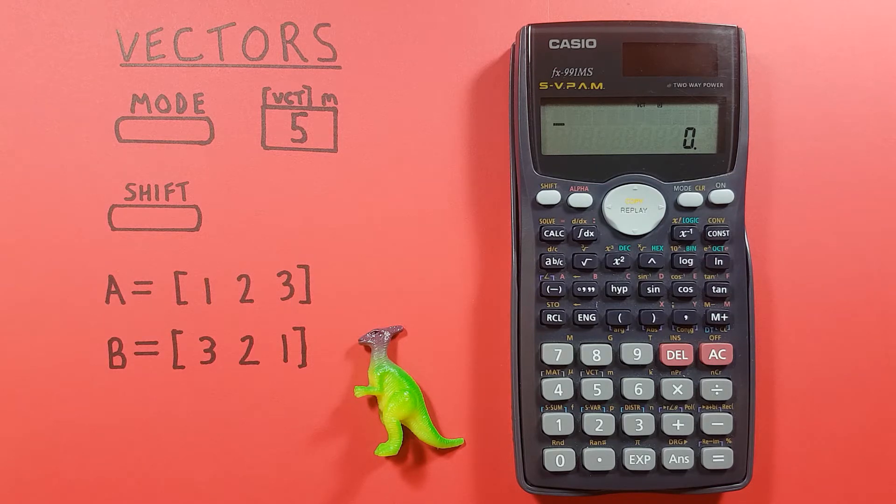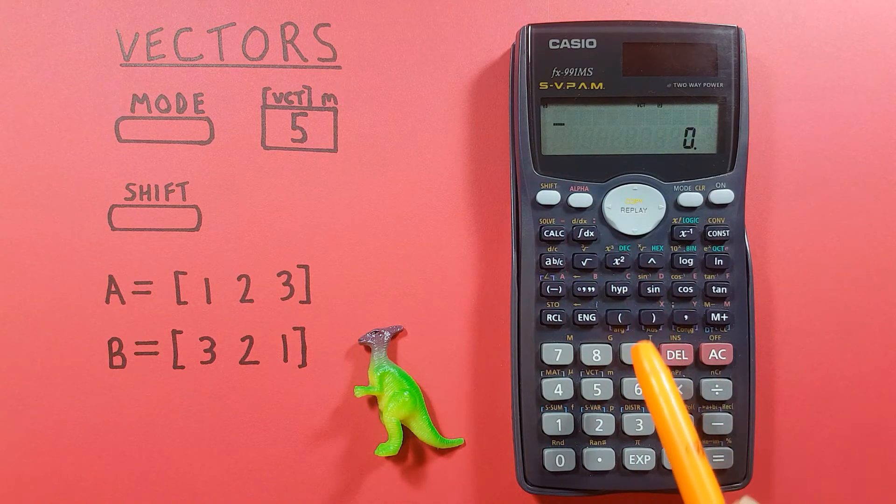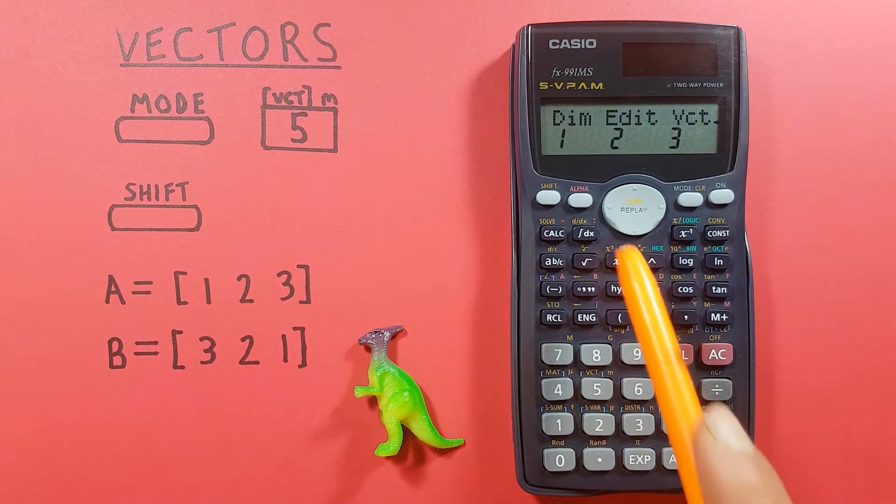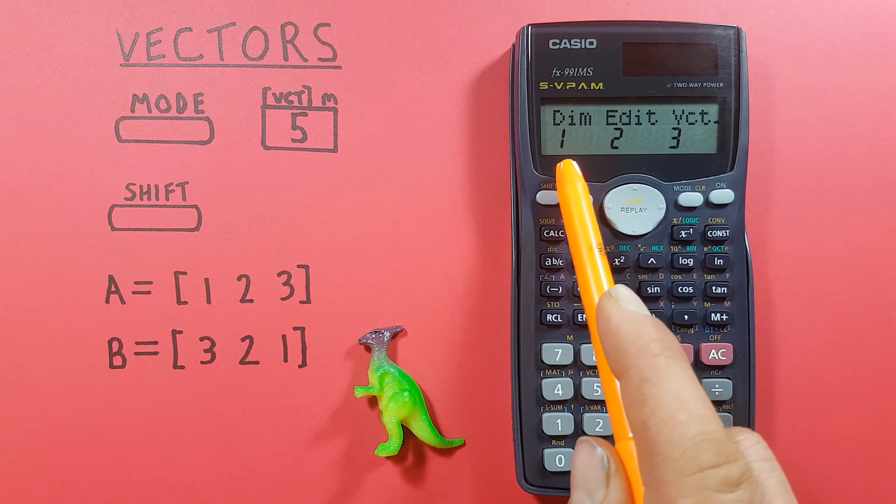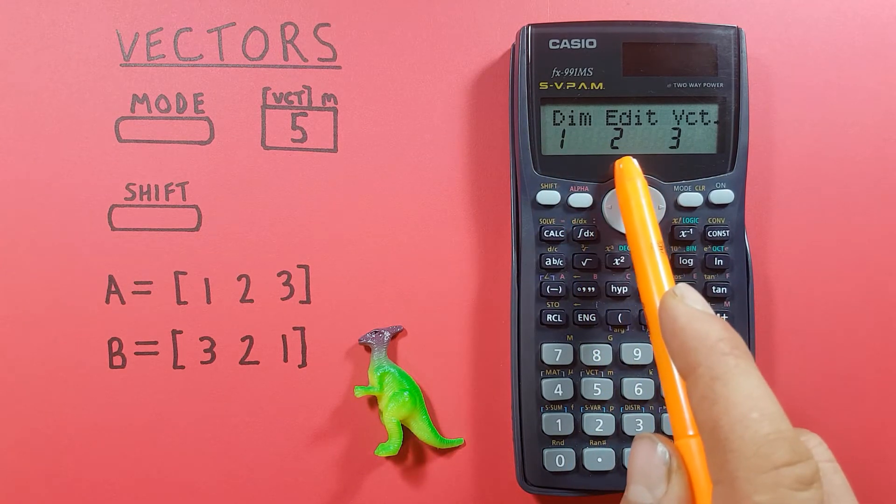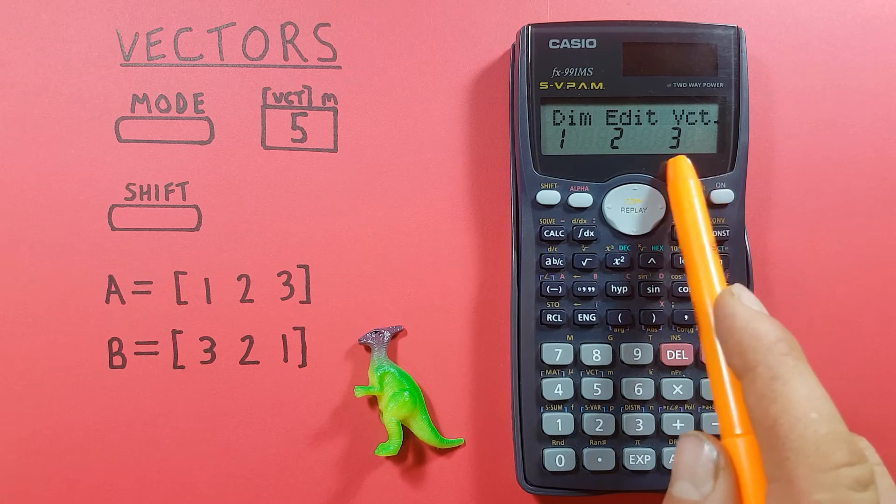To begin, we press shift and then the 5. That brings us into our vector menu here where we have number 1 for DIM dimensions, 2 for edit, and 3 for our vectors.